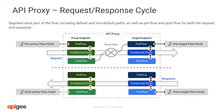API proxies and API flows are subdivided into proxy endpoint and target endpoint, as well as pre-flow, conditional flow, and post-flow. Day-to-day operations work usually does not use these concepts, but it is important to understand that they exist because the operations team may, at some point in time, provide requirements to API engineers.